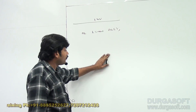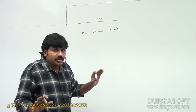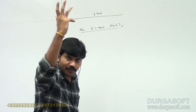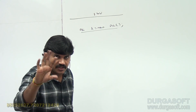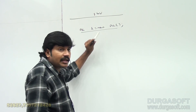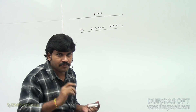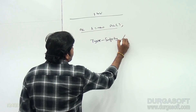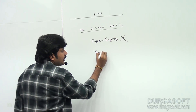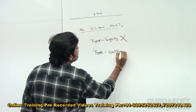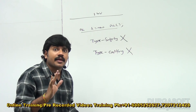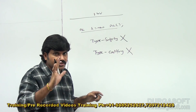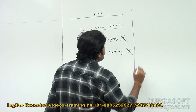The problem with pre-1.4 collections is that for an ArrayList, you could add any type of object. That means type safety is not there. At the time of retrieval, you are compulsorily required to perform type casting. So type safety is not there, and type casting is a bigger headache — until 1.4, with these non-generic collections.